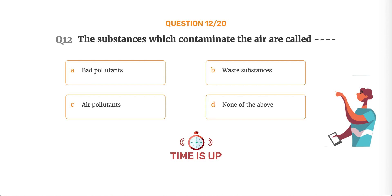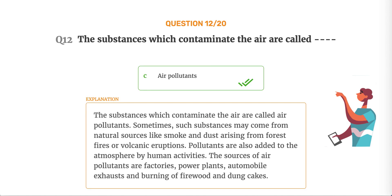The correct answer is Option C, Air pollutants. The substances which contaminate the air are called air pollutants. Sometimes such substances come from natural sources like smoke and dust arising from forest fires or volcanic eruptions. Pollutants are also added to the atmosphere by human activities. The sources of air pollutants are factories, power plants, automobile exhausts, and burning of firewood and dung cakes.